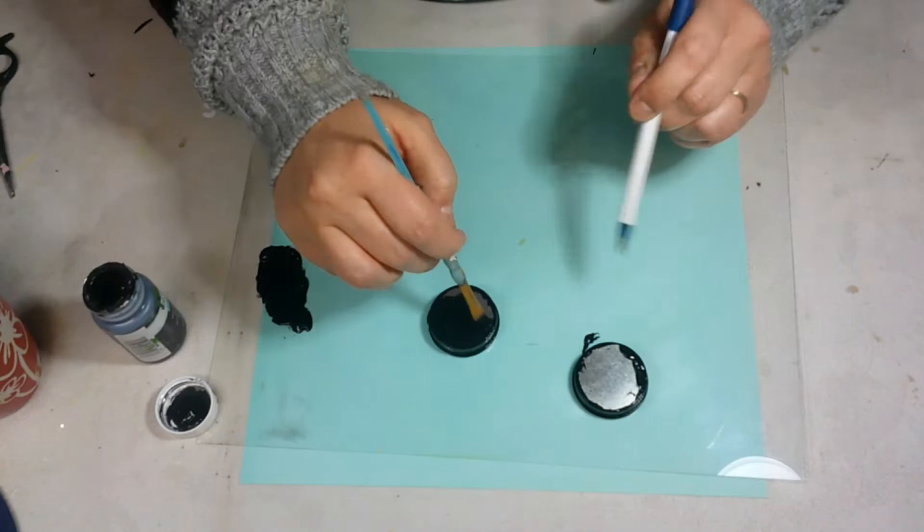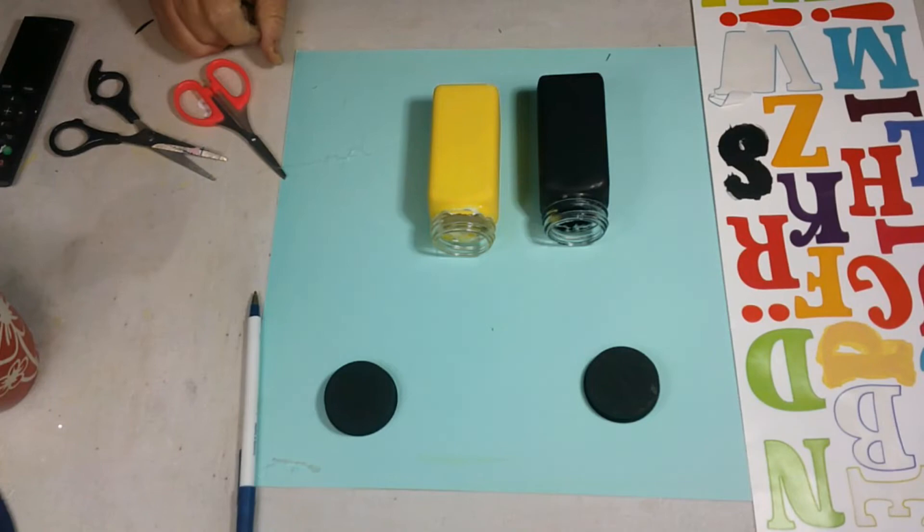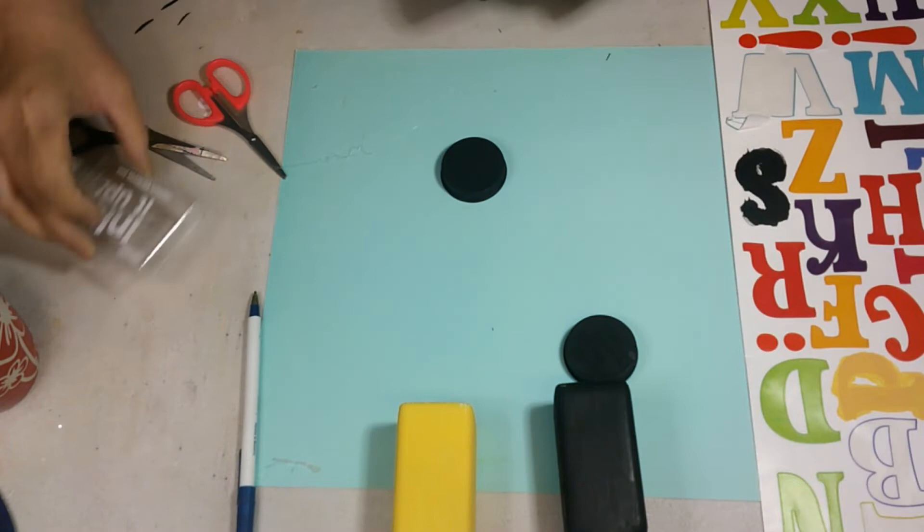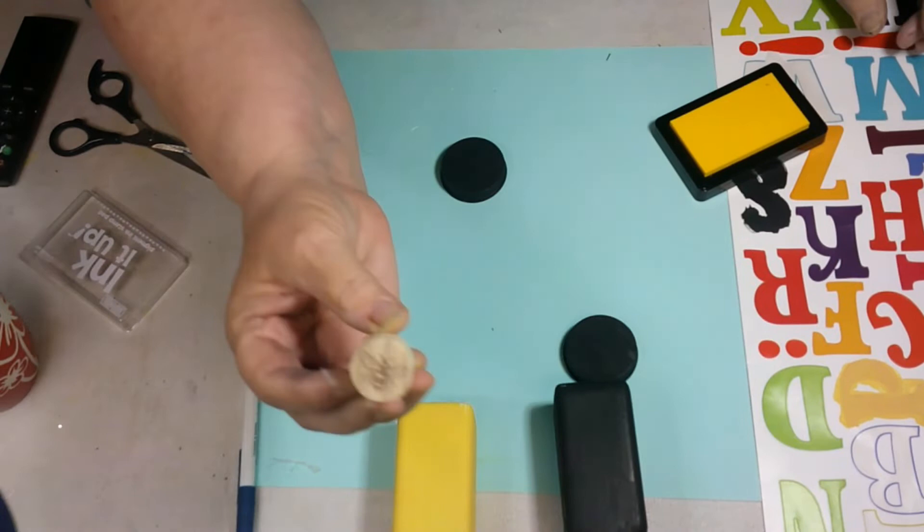All right, guys, it's time to finish our little salt and pepper shakers. We have them ready to go. We've got our letters ready to go. We're going to try to put a B on the top of it. This is a B stamp we bought at Michael's the other day.